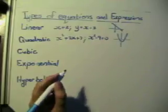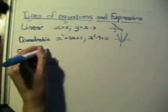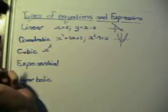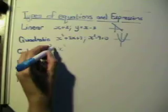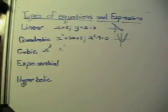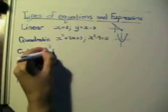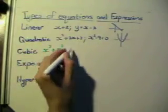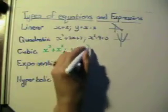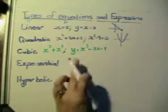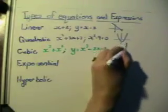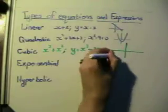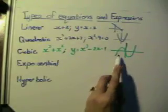A cubic function is one where the highest exponent is 3, so x to the power of 3. There can also be an x squared, an x, and a constant in it, but the highest exponent is x to the power of 3. The graph of a cubic equation has two curves, whereas the parabola has one.